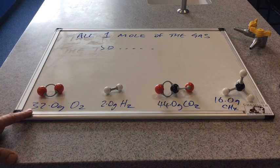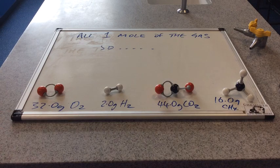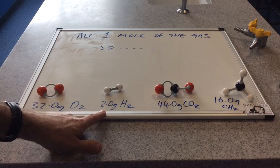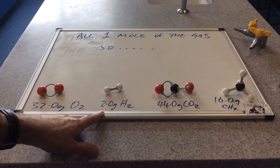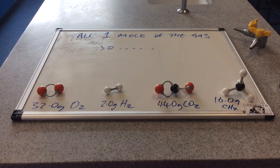So 32 grams of oxygen, well that's the MR of O2, 2 times 16. That's one mole of O2. That's one mole of H2. That's one mole of CO2. And that's one mole of CH4.